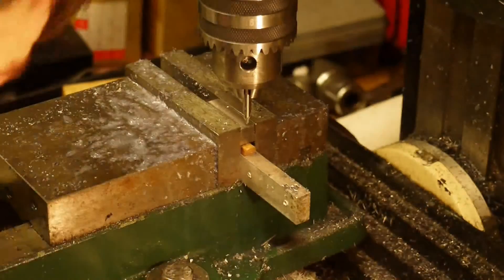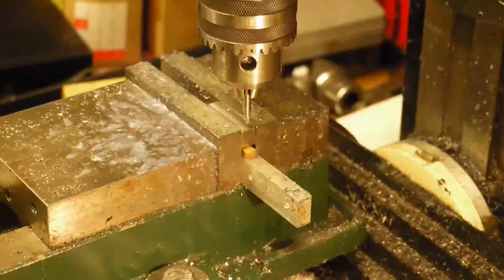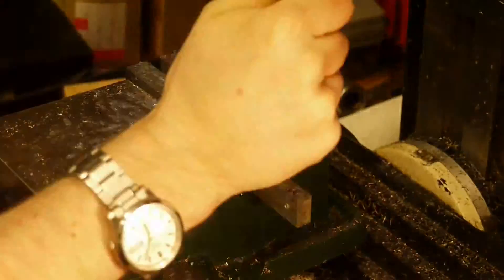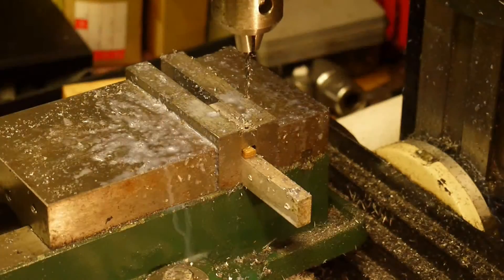And now I'm drilling a 2.5mm bit for an M3 tapped hole that will be tapped halfway and 3.1mm the other way, so that when we cut the piece in half, the two sides will clamp together nicely.